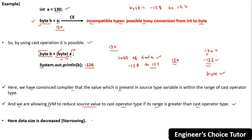The data size is decreased — that is why it is called narrowing. int a = 130 has a data size of 4 bytes, and byte is 1 byte, so from 4 bytes to 1 byte is narrowing.